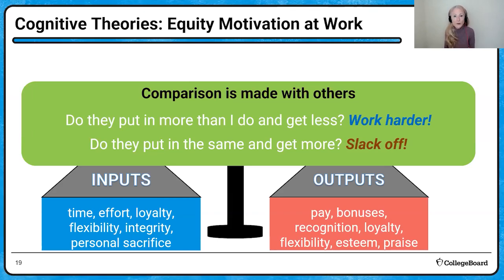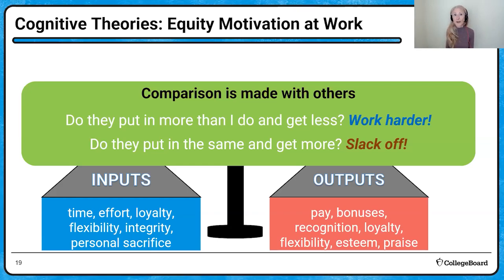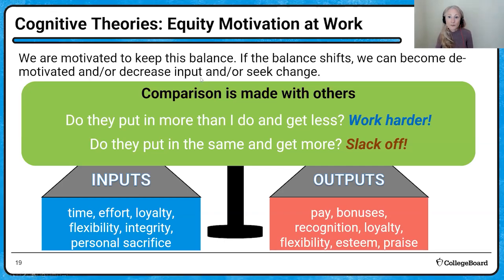If that friend you work with puts in about the same amount of work and loyalty but gets paid more and gets more praise, then according to equity motivation theories, you're going to restore equity by slacking off. We compare ourselves to others, wanting our inputs and outputs to be roughly the same. If the balance shifts, we become demotivated and either decrease our input or seek a change, like getting a new job.